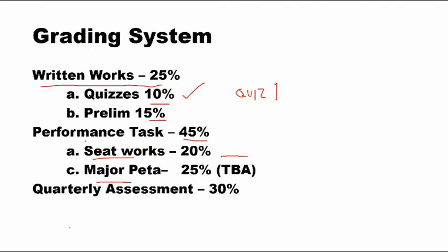The difference from other subjects is the quarterly assessment. Since this is a major/specialized subject — only ABM has Accounting 1 — the quarterly assessment is 30%. Just to clarify, if you did not take the quarterly assessment or you fail it, expect that you will have a low grade. If the exam is worth 1 to 30%, the passing mark is 20%.